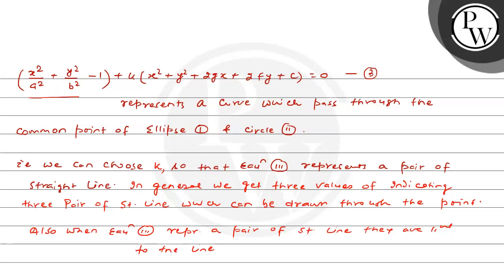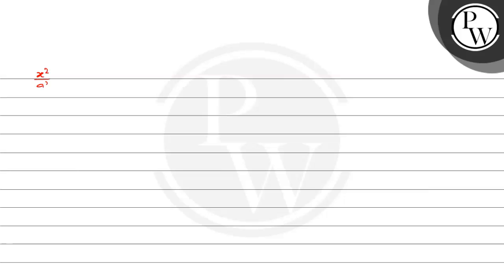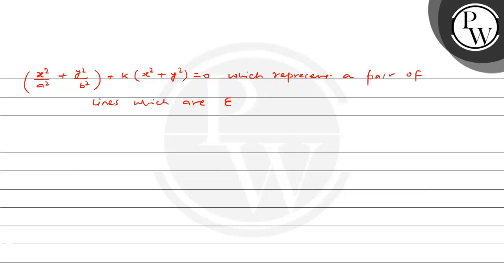Lines ہم لوگ homogeneity کے form میں لے جو origin سے pass کریں — this will be x²/a² + y²/b² + k(x² + y²) = 0. یہ line equally inclined to the axes سے ہے اور یہ homogeneous ہے اور origin سے بھی pass کر رہا ہے کیونکہ x = 0 پر y بھی 0 ہو جاتا ہے — which represents a pair of lines equally inclined to the x-axis.